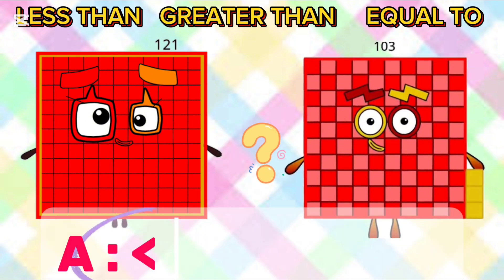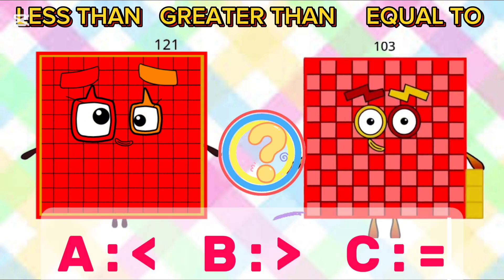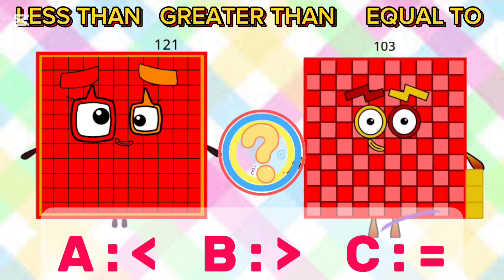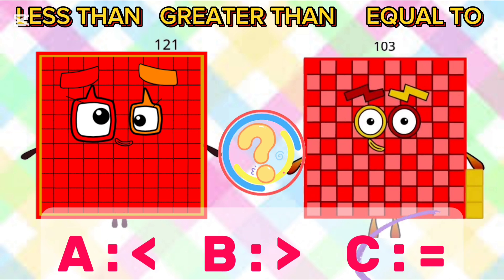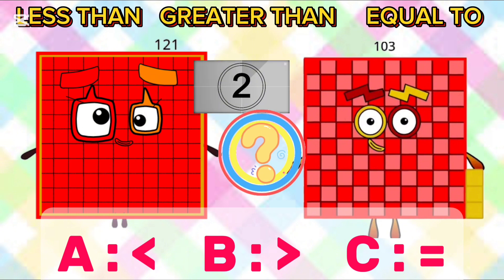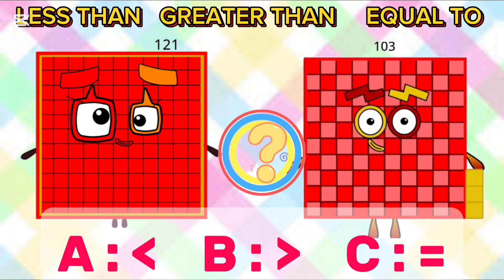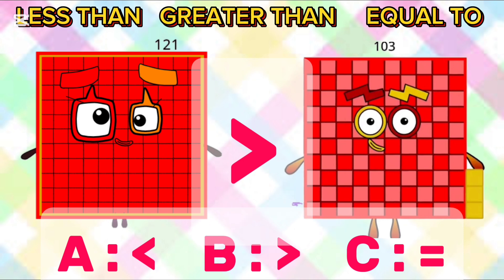What will come? A: less than, B: greater than, C: equal to. The answer is greater than. 121 is greater than 103.